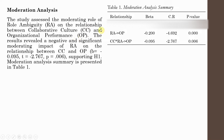The results revealed a negative and significant moderating impact of RA on the relationship between CC and OP. The interaction is negative, meaning RA is negatively moderating the relationship. The p-value is 0.006 — which means significant — so your H1 is supported. The moderation analysis summary is presented in a table showing the relationship assessed, your beta values (regression weights), T-values, and p-values.